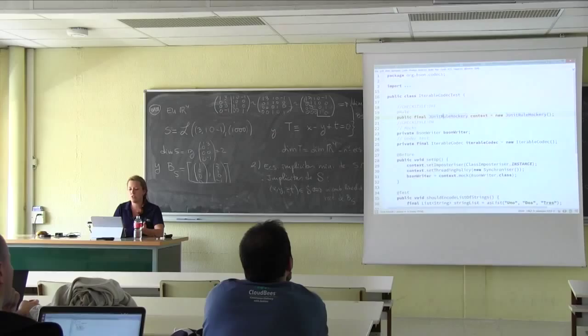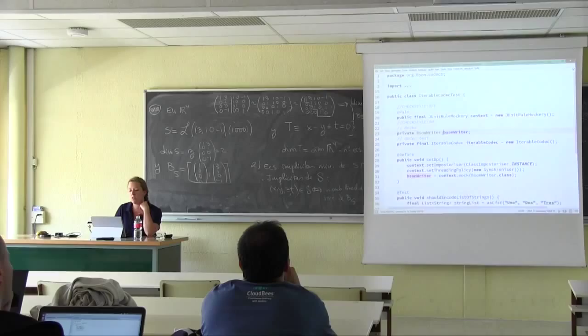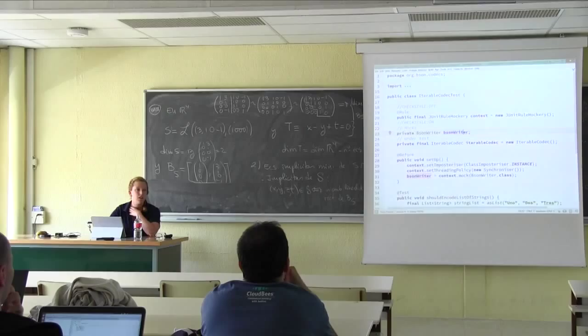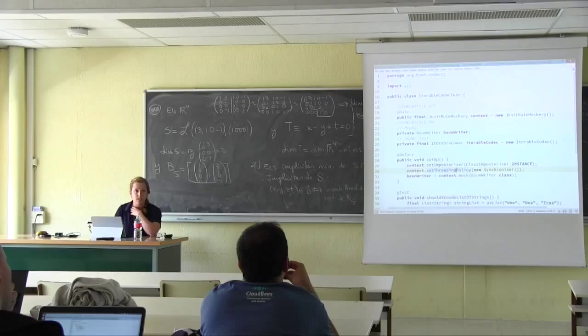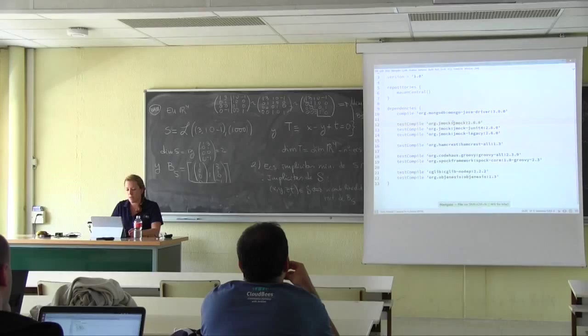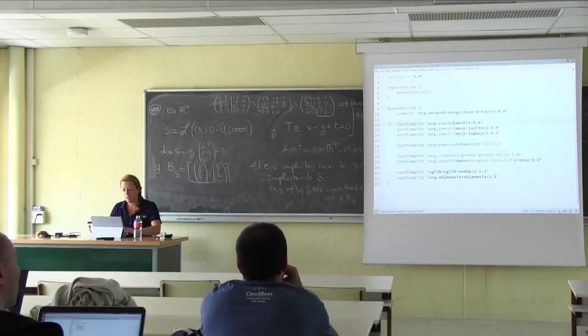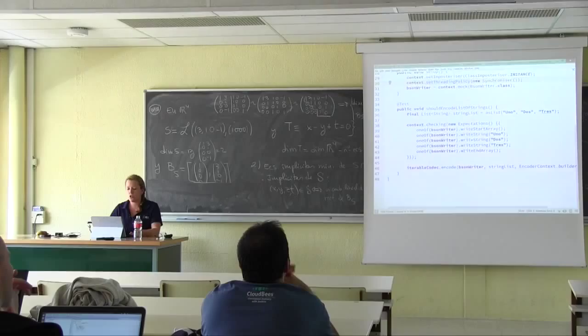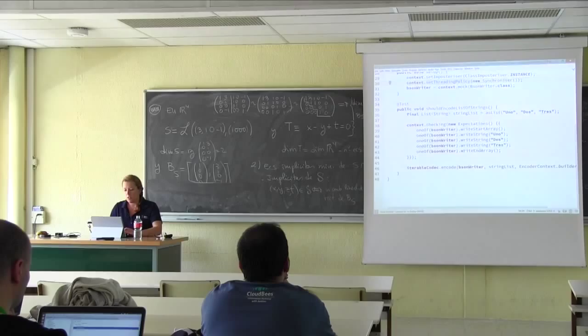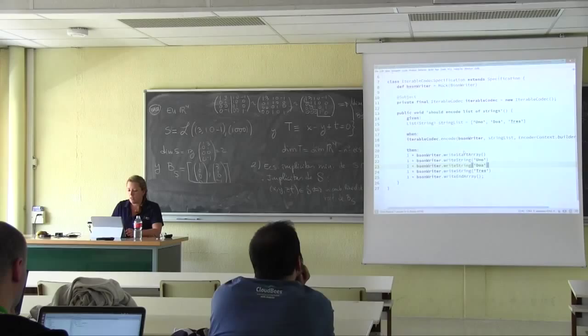JMock is a little bit weird because your expectations come before the actual thing you're testing — a bit backwards. But you get used to it and can live with it. However, it comes with quite a big cost. I have to have this JUnit rule Mockery. It's not clear at the field level which things are going to be mocked versus what I'm actually testing. I have to have this setup because BSONWriter is a concrete class, not an interface, so to mock it in JUnit I have to set this imposterizer and threading policy and import a bunch of things.